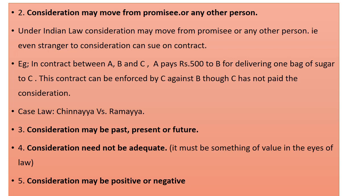The similar case is studied in the case law called Chinnaya vs. Ramaya. In this case, A agreed to transfer her property to her daughter through a gift deed, on the condition that the daughter must pay annuity to A's brother. The daughter executed a separate deed in favour of her maternal uncle agreeing to pay the annuity. Later she refused to pay, on the ground that no consideration had moved from the maternal uncle. But it was held by the court that even though he was a stranger to consideration, as a party to the contract, he could enforce the contract.